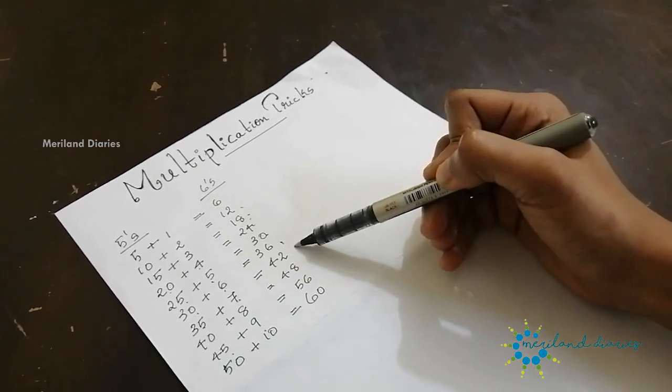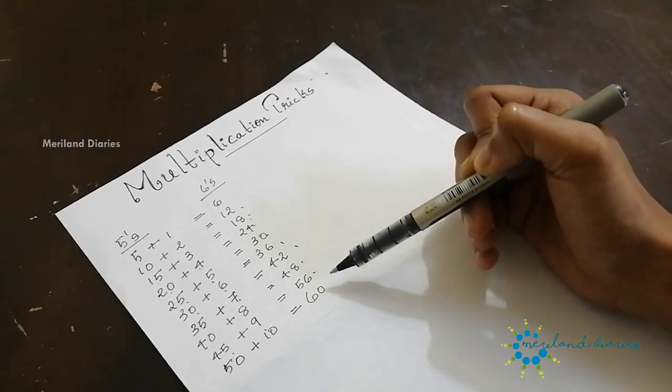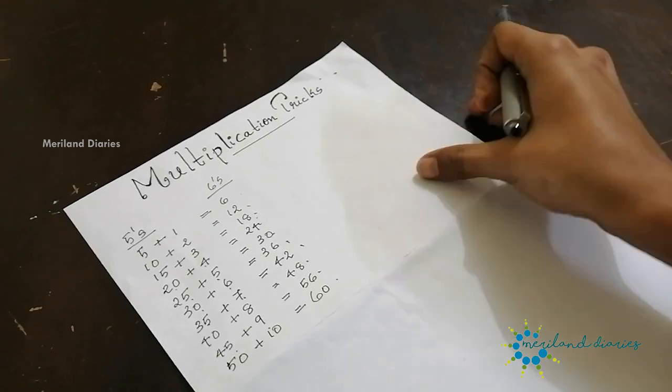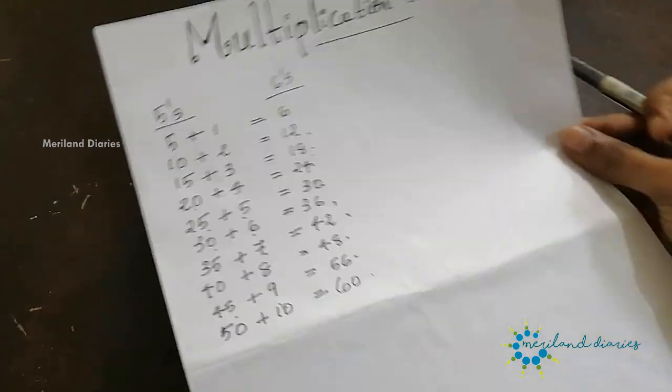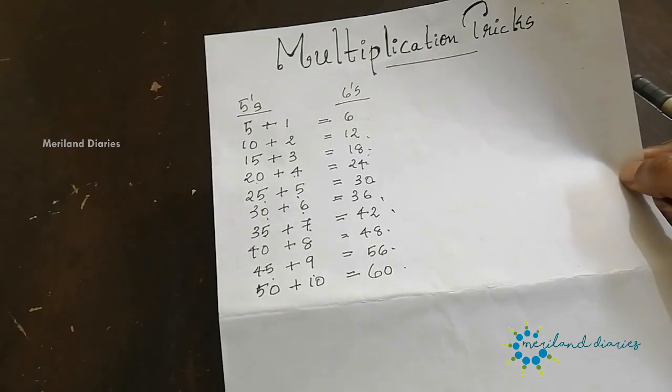6 into 6 is 36, 6 into 7 is 42, 6 into 8 is 48, 6 into 9 is 54, and 6 into 10 is 60.